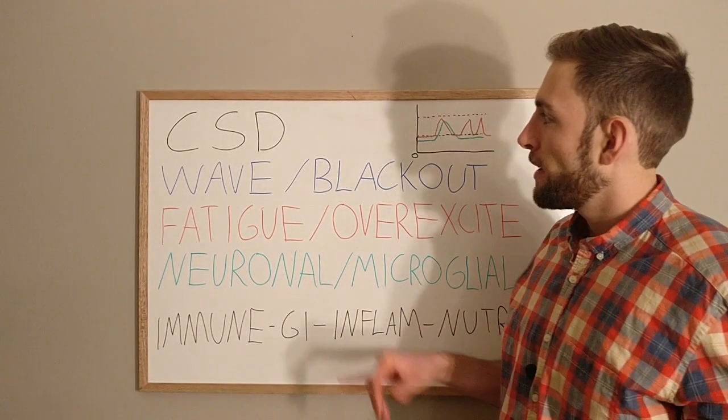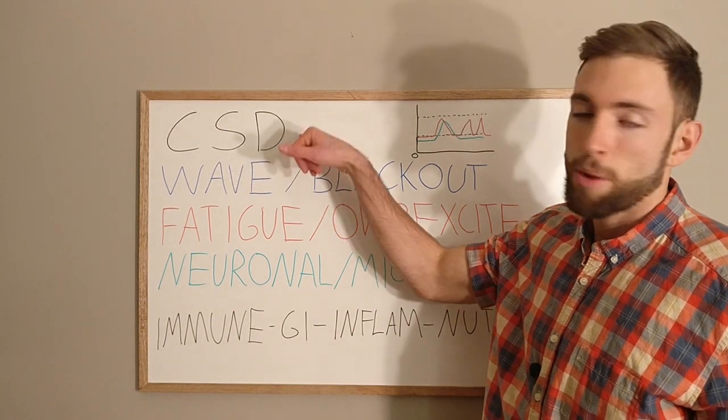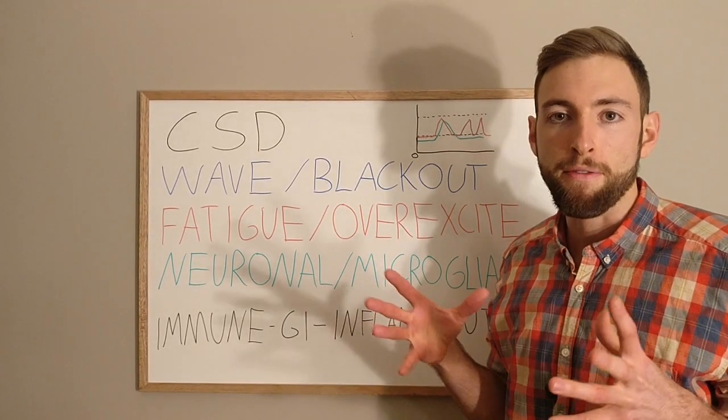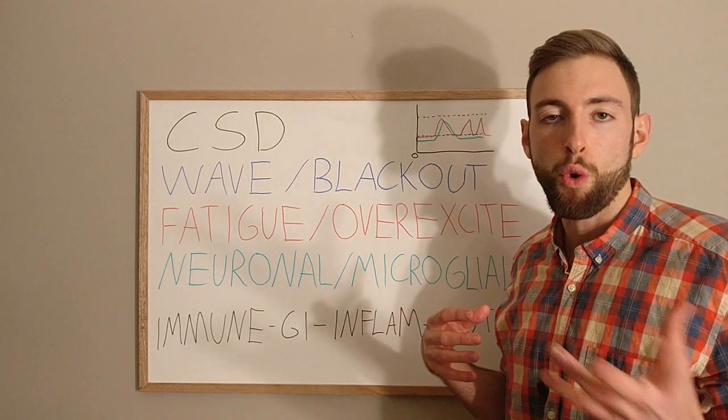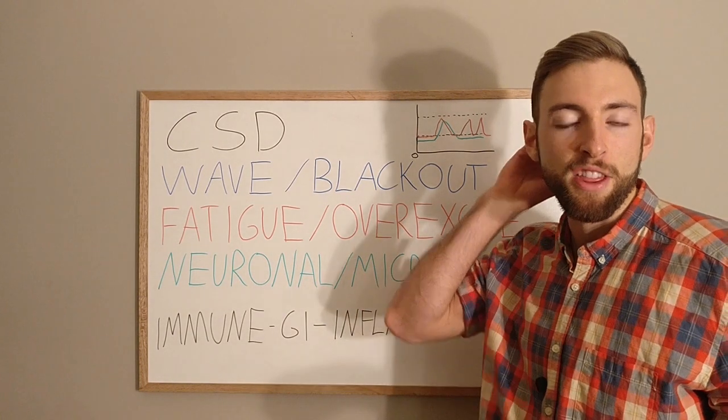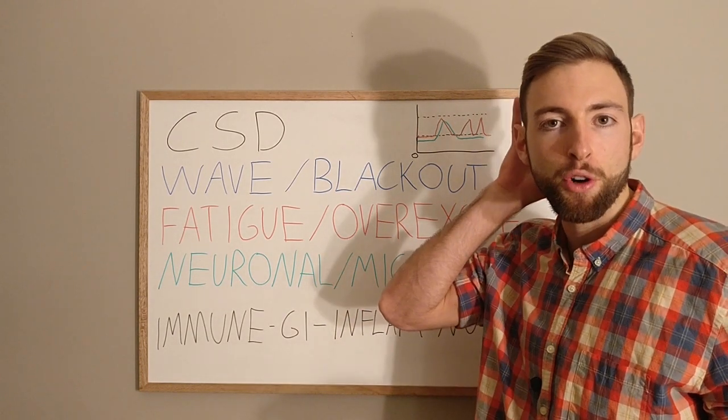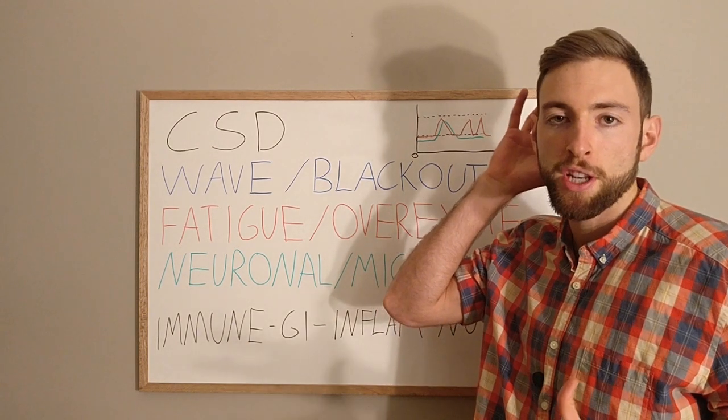So in summary, it's important for us to understand cortical spreading depression, which is like a wave. For visual aura migraine sufferers, it's a wave in the back of the head, in the occipital region, the visual processing region.